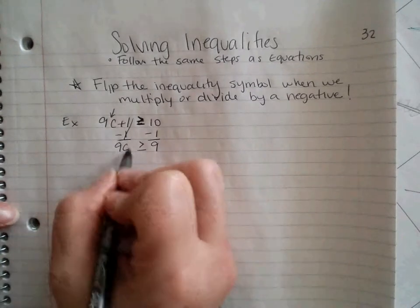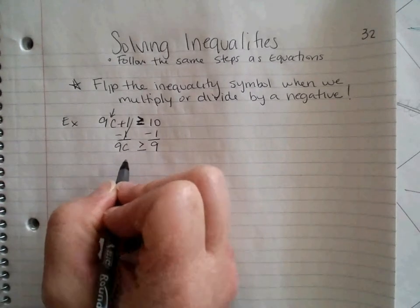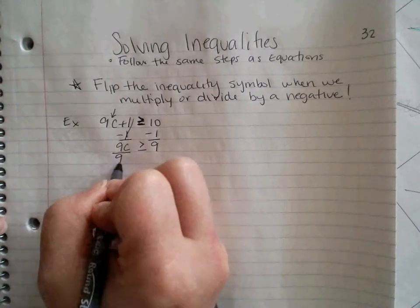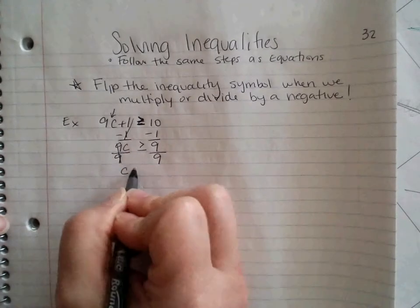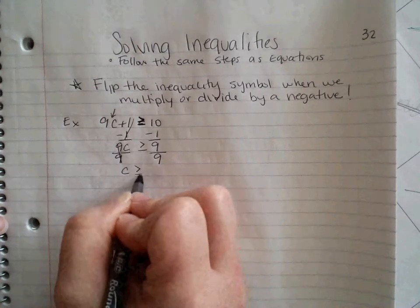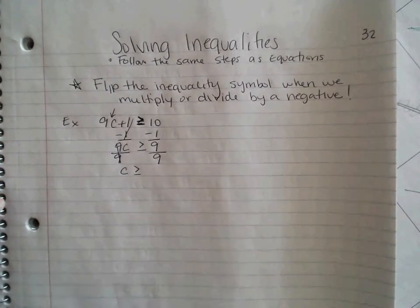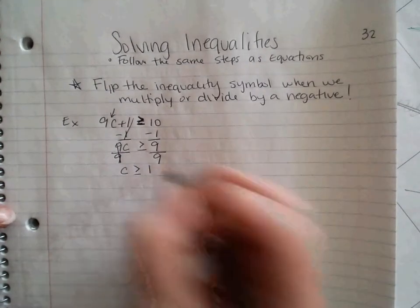Now, on both sides, I've got to get rid of my 9 that's beside the c so I can see by itself. So I'm going to divide both sides by 9 since it's multiplication. I'm going to bring down c is left. Bring down my symbol just the way it is because I did not multiply and divide by negative. 9 divided by 9 makes 1.